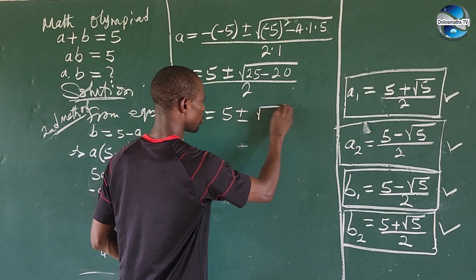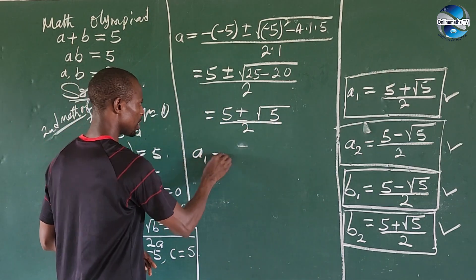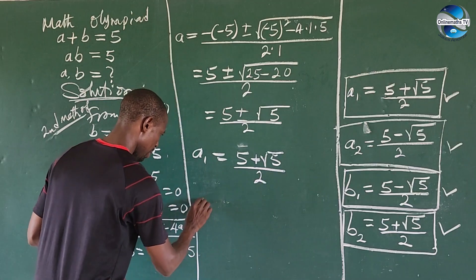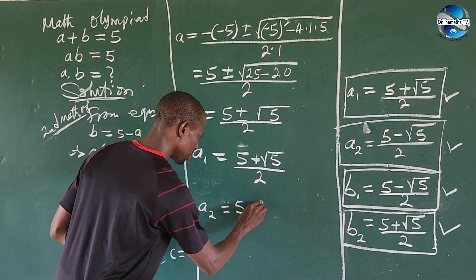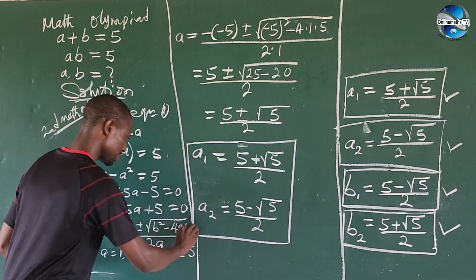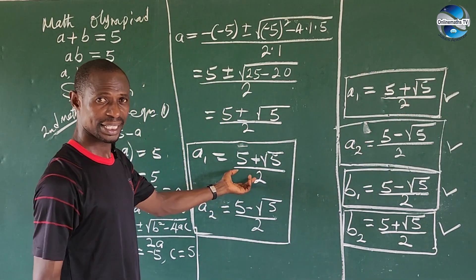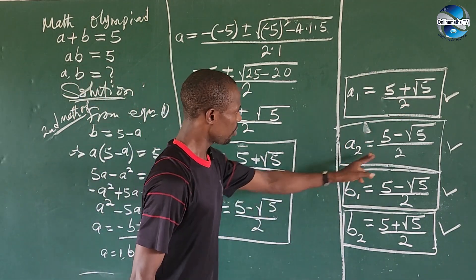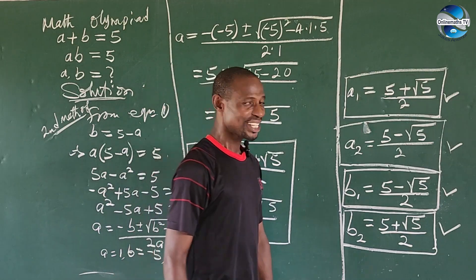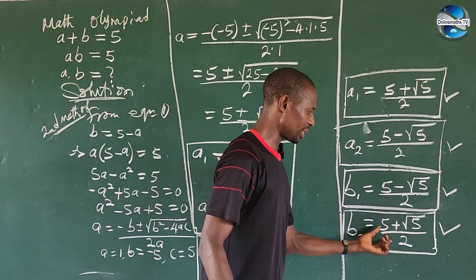This gives us five plus or minus the square root of 25 minus 20, all over two, which equals five plus or minus the square root of five, all over two. So a₁ equals five plus root five all over two, and a₂ equals five minus root five all over two. Comparing with the first method, the values are exactly the same — and substituting these into equation one will give the same b₁ and b₂ as before.